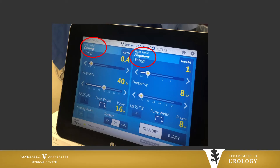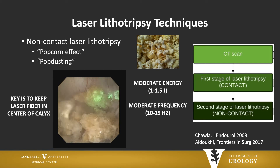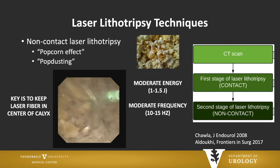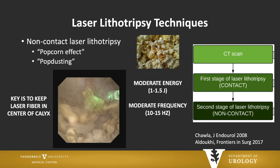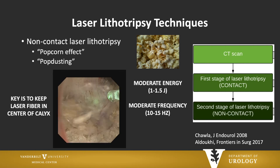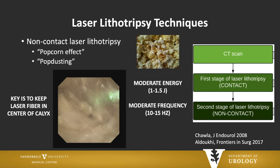These newer high-powered lasers have a two-pedal phenomenon, so you can set one pedal at dusting and one at fragmentation. They come with preset values — you can just tell your laser technician 'put dusting on' or 'put fragmentation on.' There is also a non-contact technique called popcorning or pop dusting, where you fire the laser in the middle of a calyx so stone fragments move around — caused by collapse of cavitation bubbles — hitting the tip of the laser fiber repeatedly to get smaller and smaller fragments. For popcorning, use moderate energy — 1 to 1.5 joules — and moderate frequency — 10 to 15 hertz.